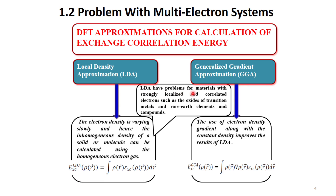LDA has problems for materials with strongly localized and correlated electrons, such as oxides of transition metals and rare earth elements and compounds, where we do not have homogeneous electron density. For these cases, we use generalized gradient approximation (GGA), where the use of the electron density gradient along with the constant density improves the results of LDA.